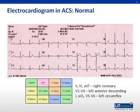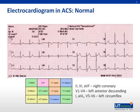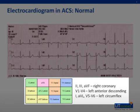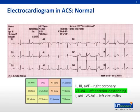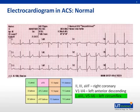Displayed here is a normal 12-lead ECG. It is beneficial to develop a standard system for evaluating ECGs such as rate, rhythm, axis, intervals, PR and ST segments, and P, QRS, and T wave morphology. The colored box shows geographical groupings of ECG leads that correspond to anatomic locations on the heart. Leads 2, 3, and AVF correspond to the inferior portion, supplied by the right coronary artery. Leads V1 through V4 correspond to the septum and anterior portion, supplied by the left anterior descending artery. Leads 1, AVL, V5, and V6 correspond to the lateral portion, supplied by the left circumflex artery.